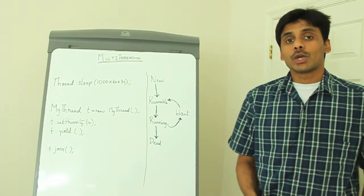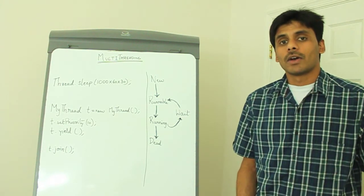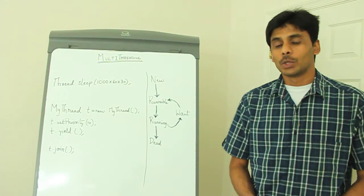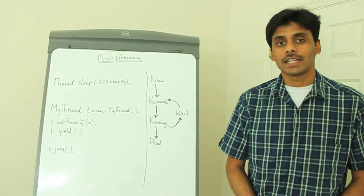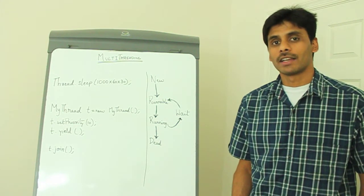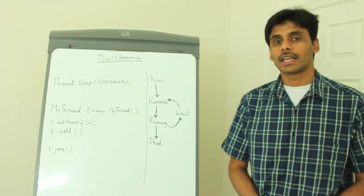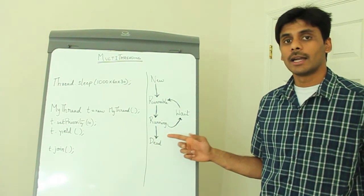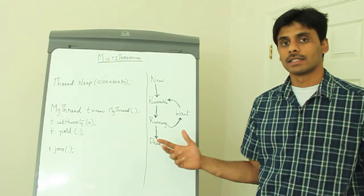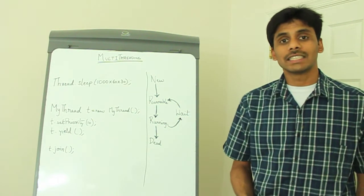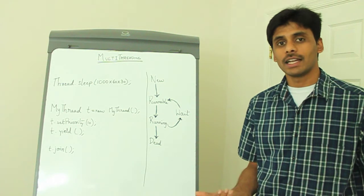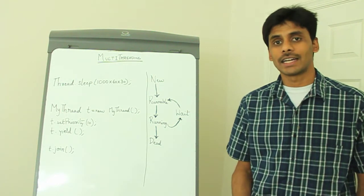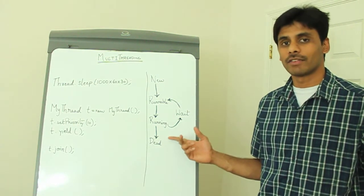The JVM also allows us to set priorities on the threads, starting from 1 to 10, 1 being the lowest and 10 being the highest priority. And then the Java schedulers can move the threads from runnable state to the running state, depending on the priorities we pass in. So if we have three threads with priorities 1, 5 and 10, that thread with the priority 10 will be moved to the running state first.